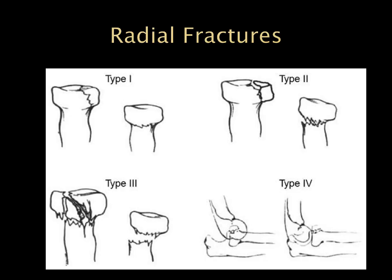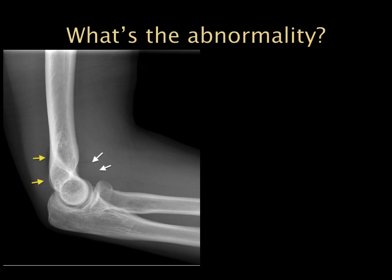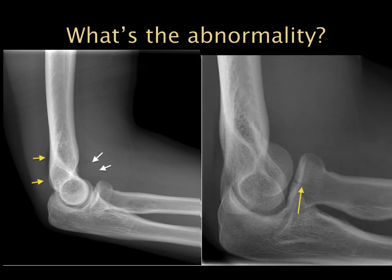We also have radial fractures of a few different types. Some are more subtle, such as this radial neck fracture where all we're seeing is slight angulation. On another elbow x-ray we see a joint effusion but no fracture is clearly visible on one view. However, with a slight change in angulation on a different view, we can see a non-displaced radial head fracture.